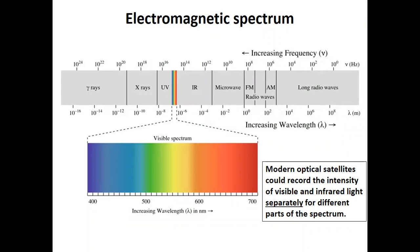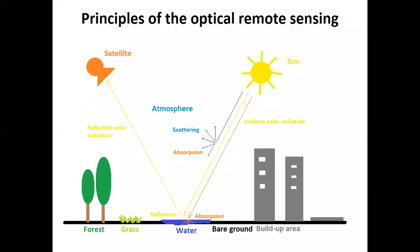Modern optical satellites can record not only the intensity of visible light, but also the intensity of a wide variety of infrared and sometimes even ultraviolet light. Importantly, they do not record all this spectrum together — they record different types of light separately.